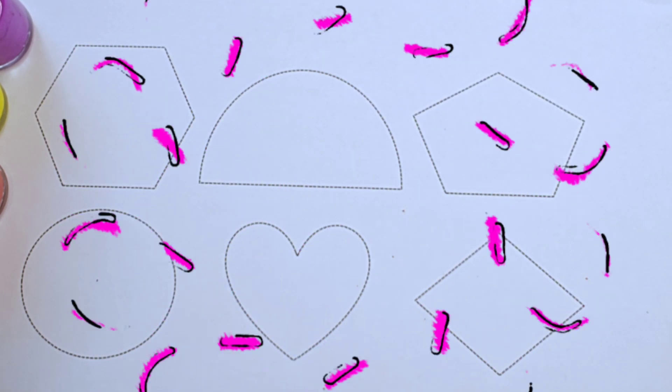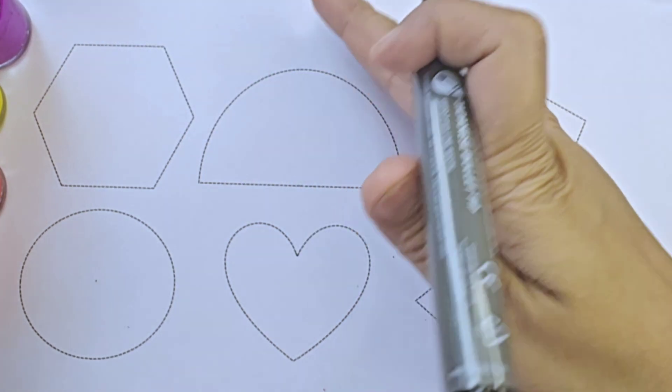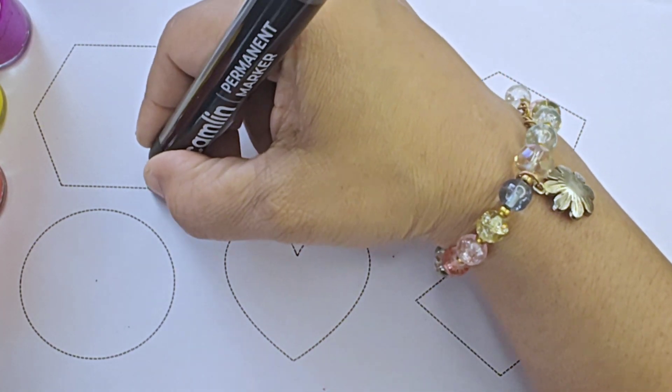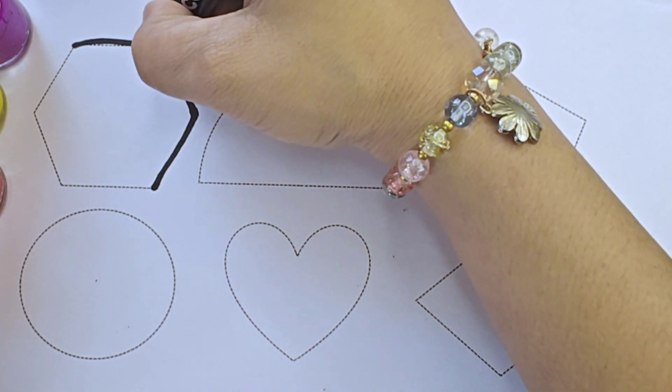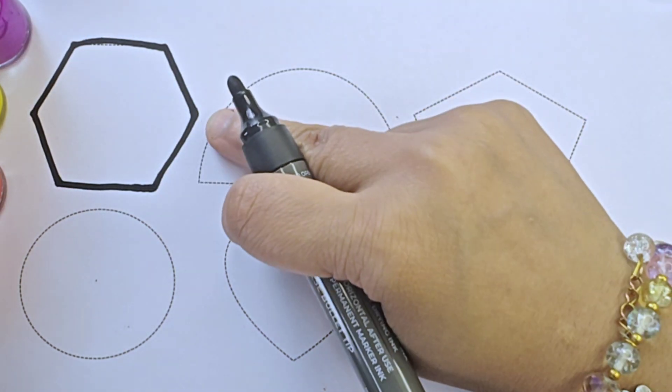Let's draw these shapes. This is black color. It is hexagon.